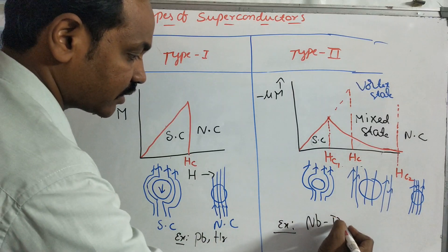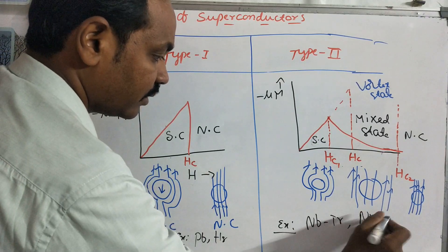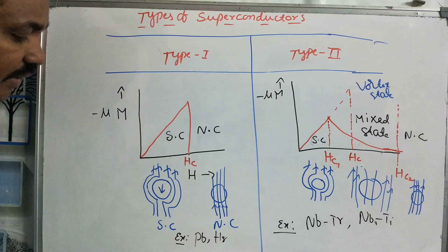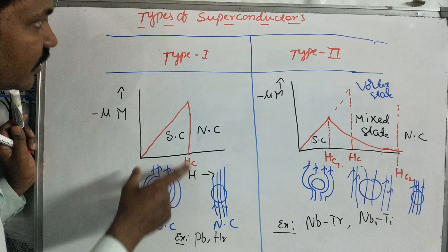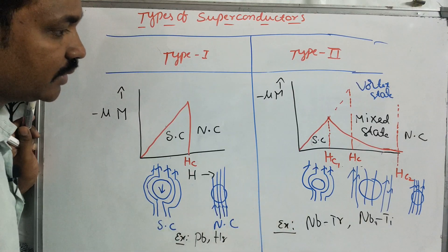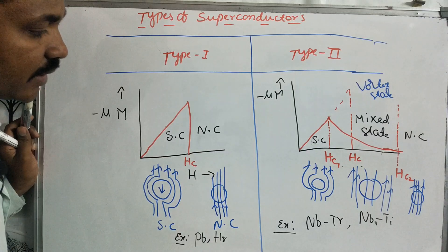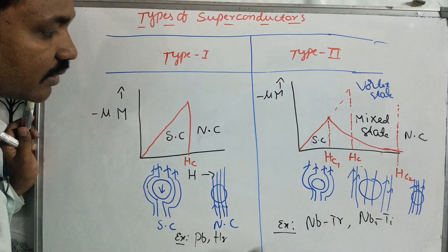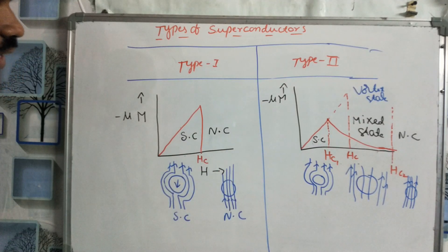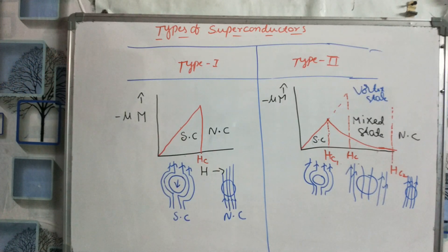These perovskite structures are used for Type 2 superconductors. We have covered the major differences between Type 1 and Type 2 superconductors. We can now explain both types clearly. See you in the next class. Thank you.